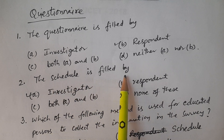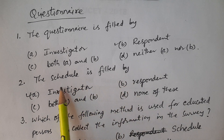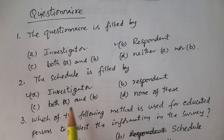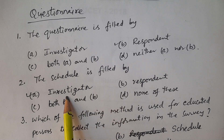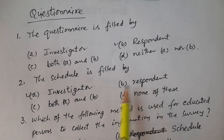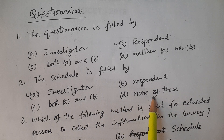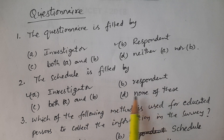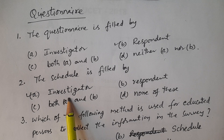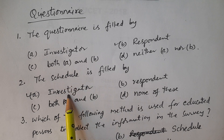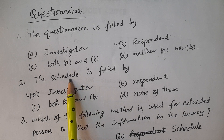The second question: the schedule is filled by — options: A. Investigator, B. Respondent, C. Both A and B, D. None. The answer is Investigator. The schedule is filled by the investigator.